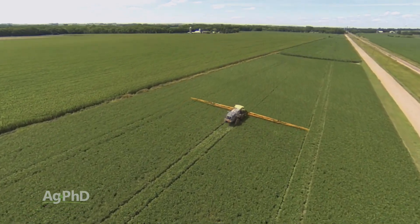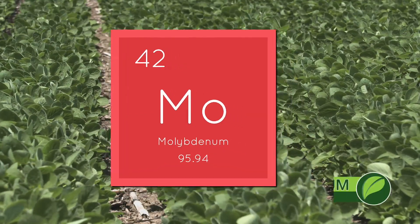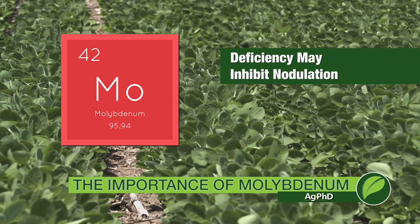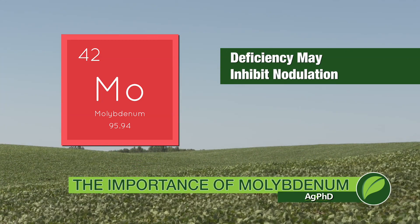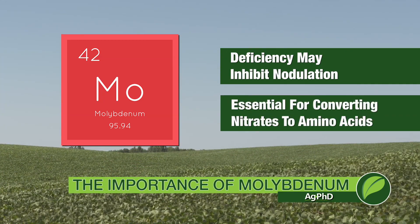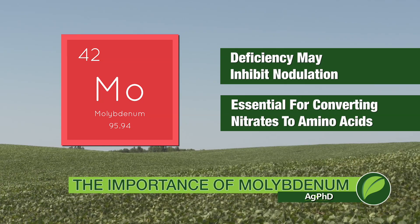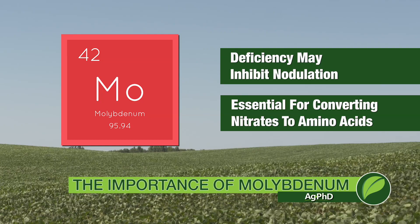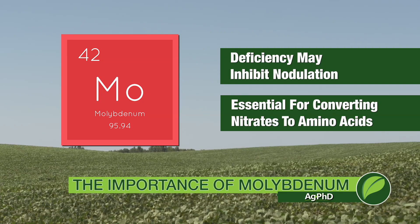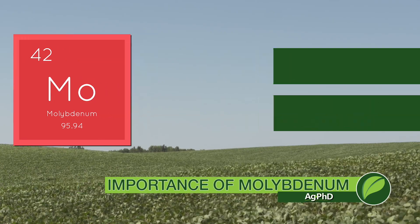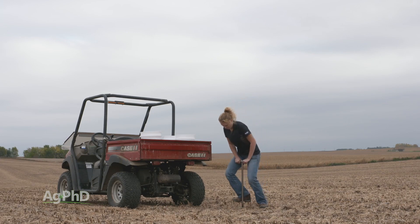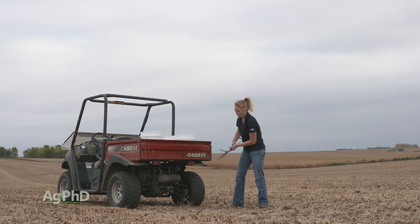Molybdenum serves some really important functions within the plant. When we see fields that have very poor nodulation, moly could be one of those factors to blame. Also, moly is very essential for converting nitrates into the amino acids that your plants use. So when we think about nitrogen and how it works in the soil and into the plant, moly is another one of those factors that's going to be really important. Our suggestion: at least run a couple of tests on your farm in some of your fields — maybe your best ground and your worst ground.